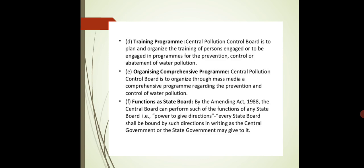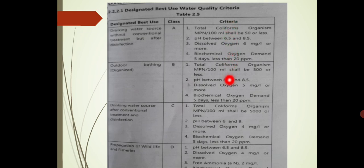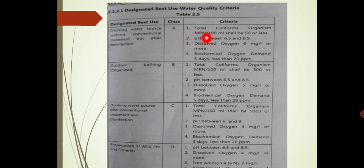CPCB also controls the SPCBs. Now let us look at the designated best use of water quality criteria taken from the CPCB website. The first column is designated best use, second is class, and third is criteria. Class A is for drinking water source without conventional treatment but after disinfection.